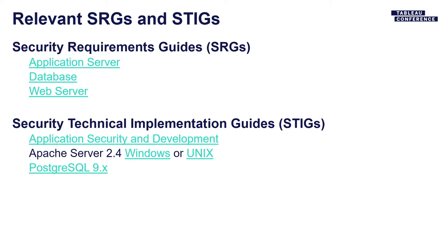In terms of a Tableau Server deployment, there are a few SRGs and STIGs that are relevant. The ones that are in scope are the three main SRGs: application server, database, and web server. Application server, because that's what Tableau Server is — its class of product. Database, because it has a built-in Postgres database that serves as its repository. And of course it's also a web server — it has the Apache web server built in, which is what you're hitting when you send requests to Tableau Server. That means there are basically three STIGs that may come into play.